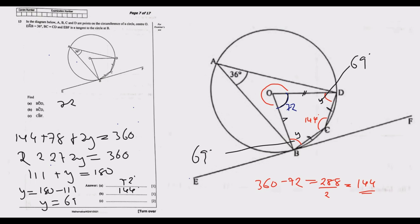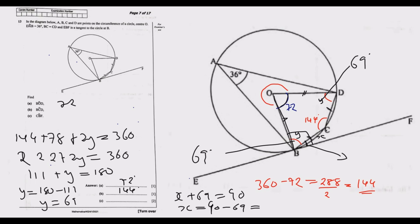Now for angle CBF. EBF is a tangent and OB is a radius, so the angle between radius and tangent is 90 degrees. We know y is 69 degrees, so calling the missing angle x: x plus 69 equals 90. Therefore x equals 90 minus 69, which is 21 degrees. So angle CBF equals 21 degrees.